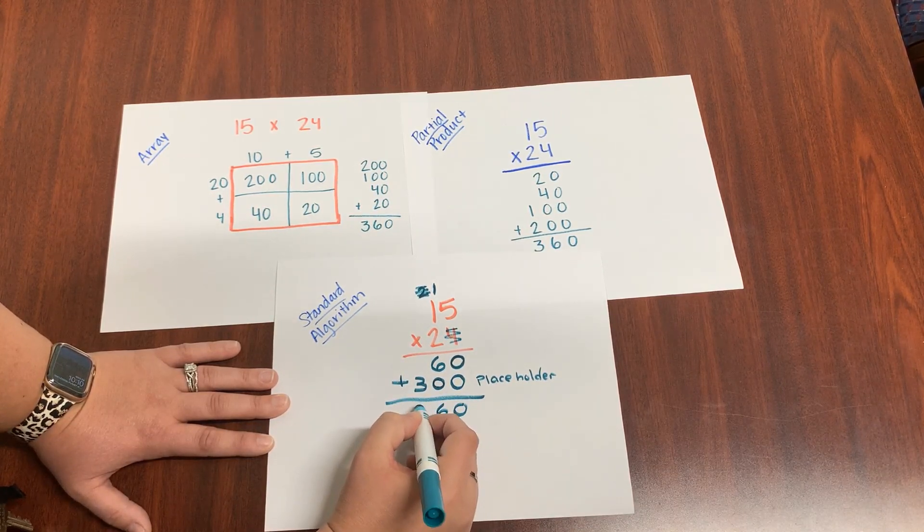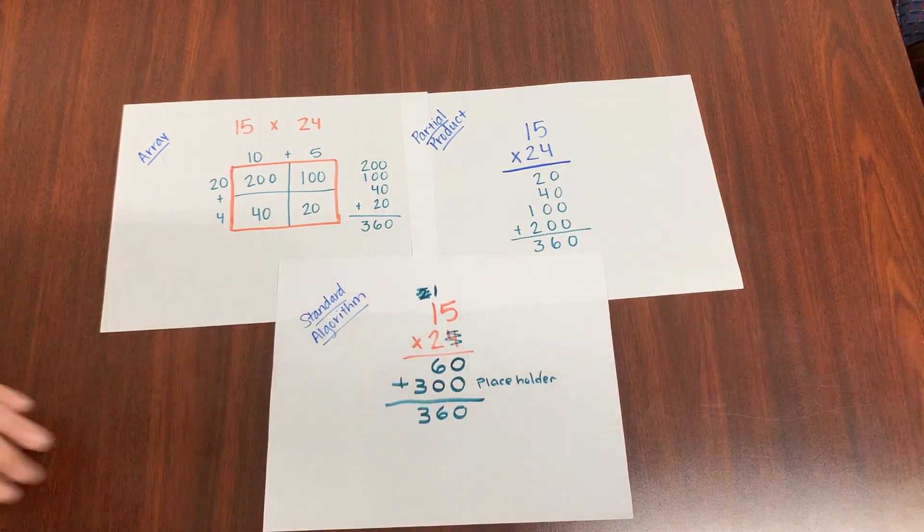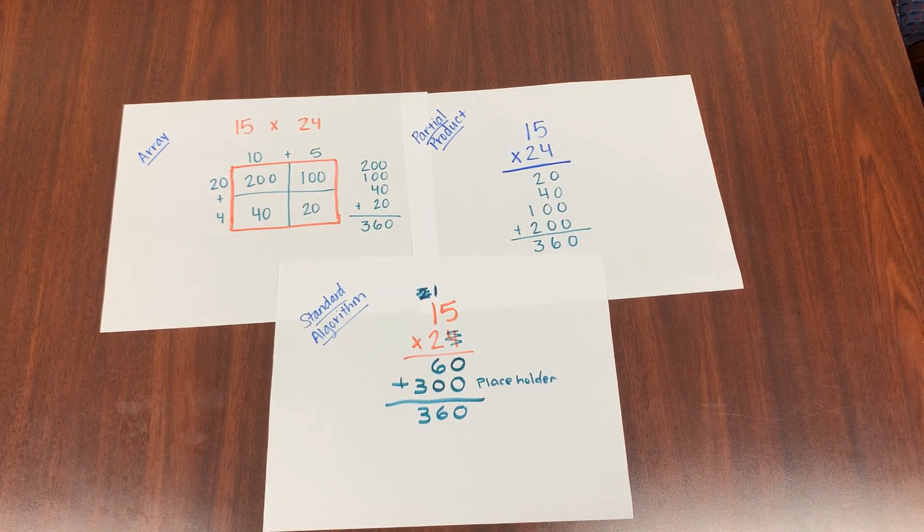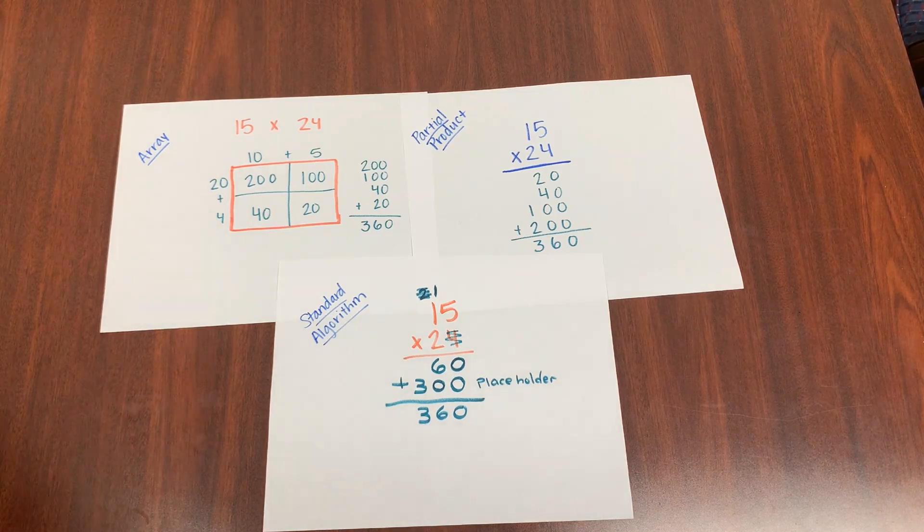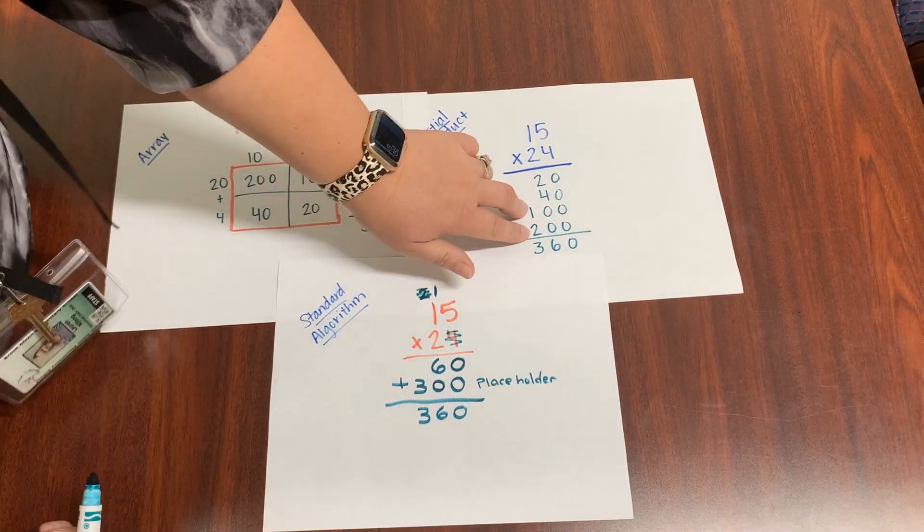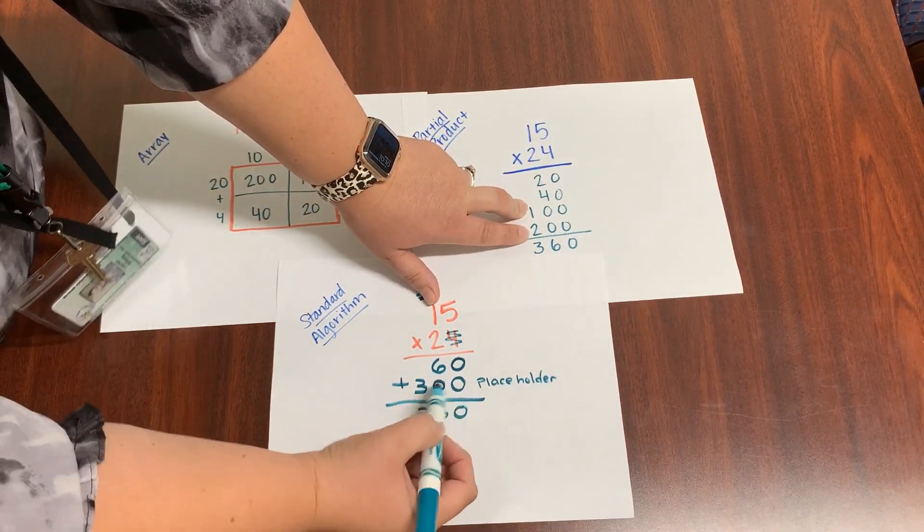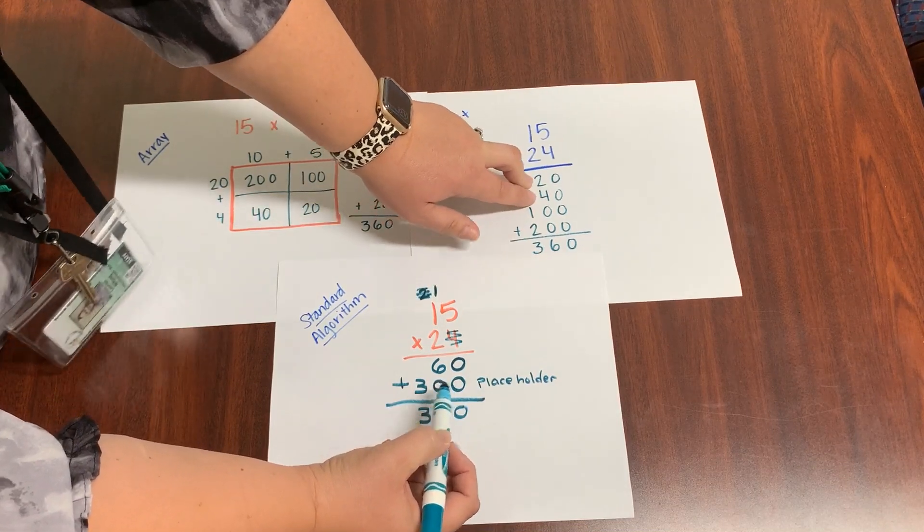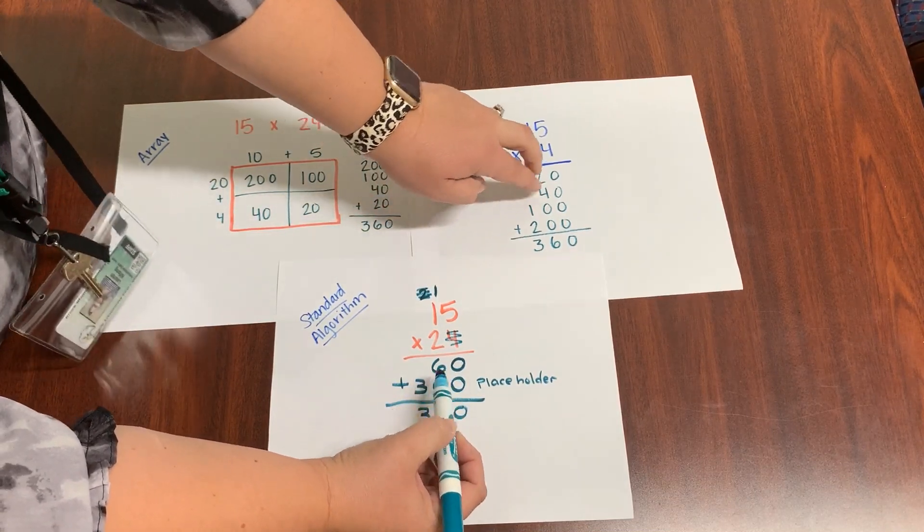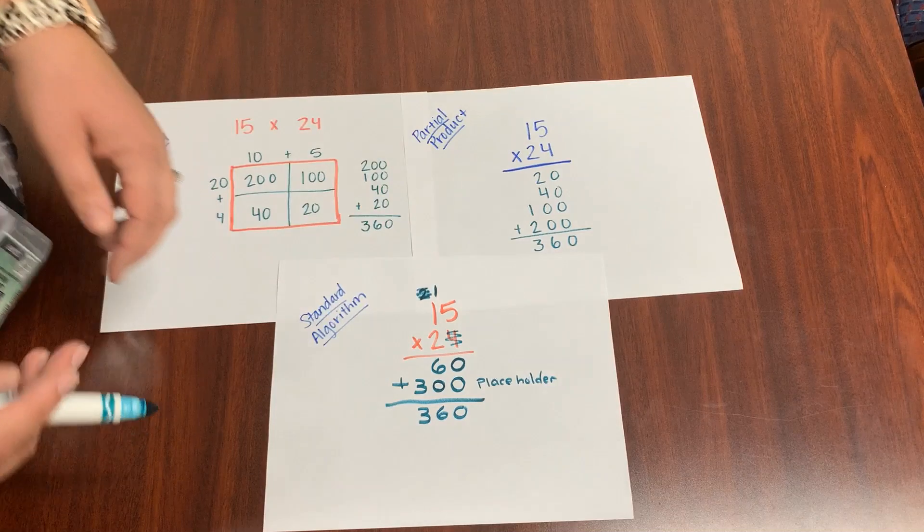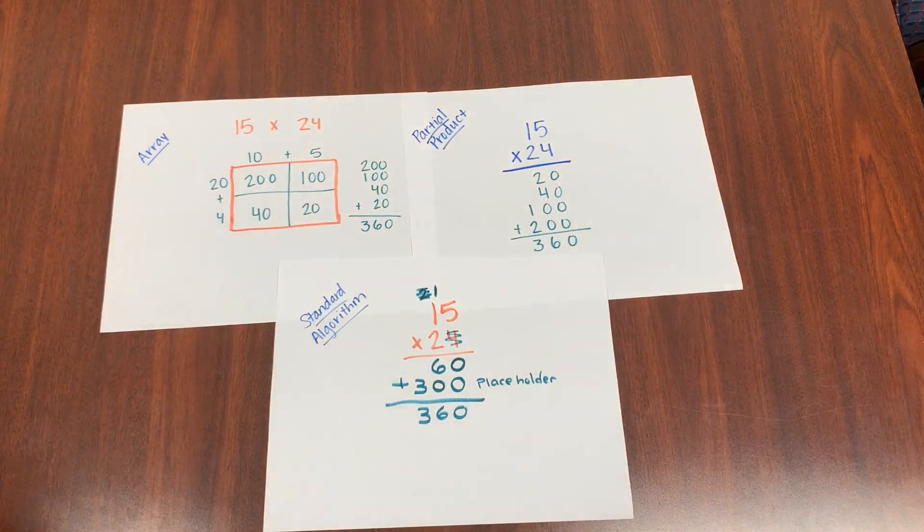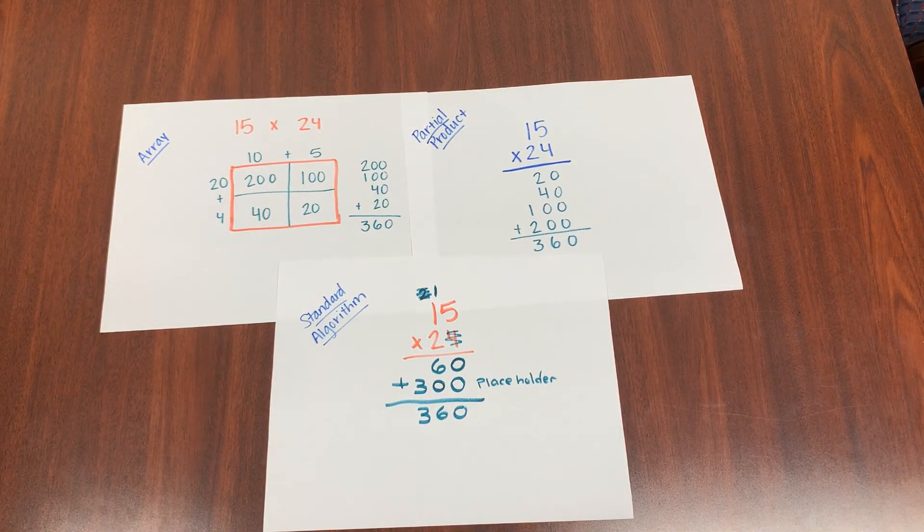Add these together and do we have the same answer? We do. So if you look here, we took the 200 and the 100 and added them together for this one. The 40 and the 20 and added them together for 60. So we just kind of scrunched this together and made it into a smaller problem, kind of minimizing the steps that we needed to solve it.